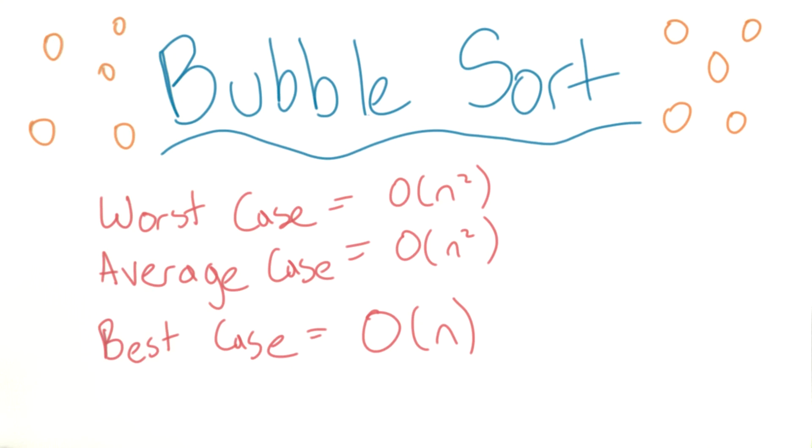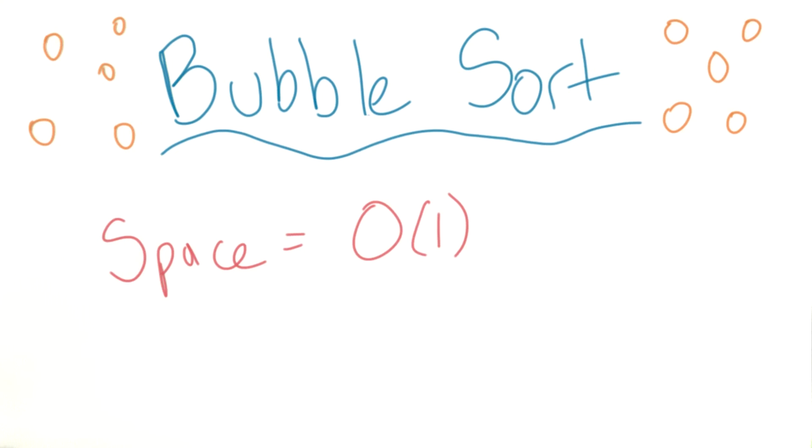And one last thing, we didn't have to use anything extra to do our sort. We had no extra arrays, no extra data structures, nothing like that. Bubble sort is a great example of an in-place sorting algorithm. So the space complexity is constant, meaning we didn't need any extra arrays or data structures in the whole process.